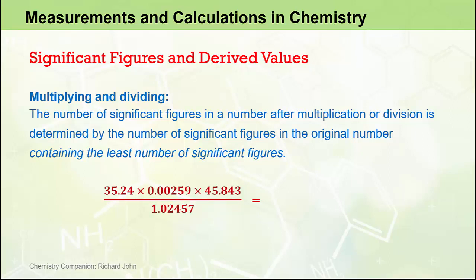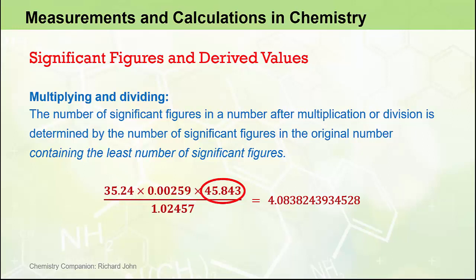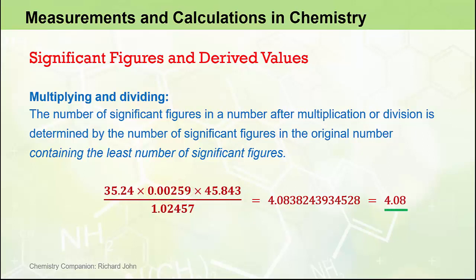Here we are multiplying three numbers together and then performing a division. When we put these numbers into our calculator, here's the answer we get — a number with a lot of significant figures in it. The question is: how many significant figures should our answer actually have? This number here has three significant figures — disregarding all those initial zeros, the three significant figures are the 2, the 5, and the 9. This number has four, this one has five, and this one has six significant figures. So it's the number with three significant figures that contains the least, and we should report our end answer rounded to just three significant figures. Our most correct answer for this multiplication and division equation is 4.08.